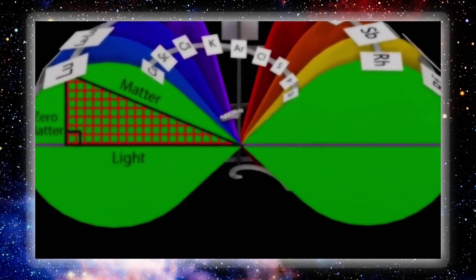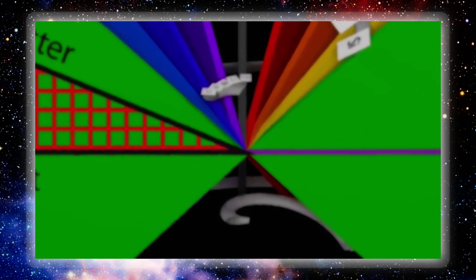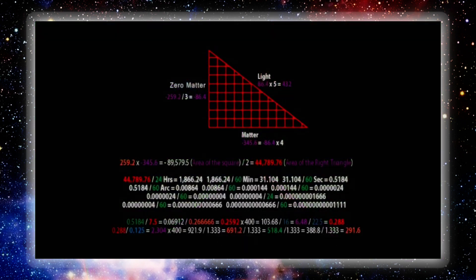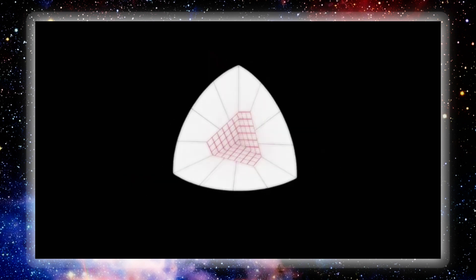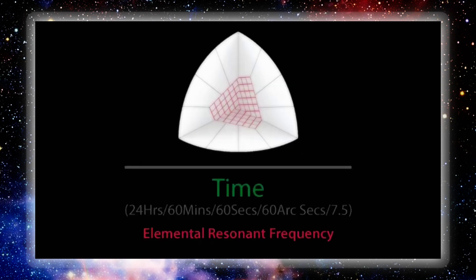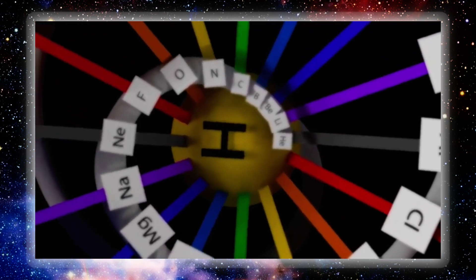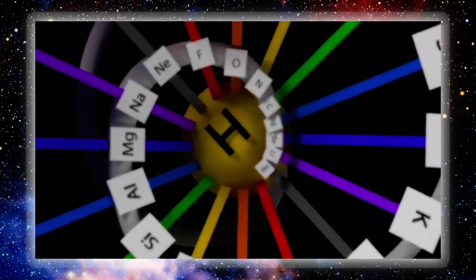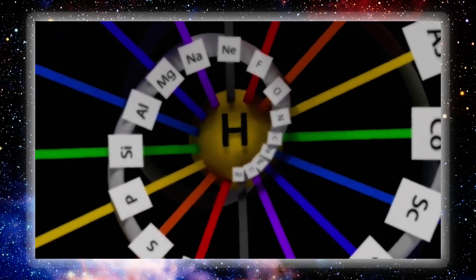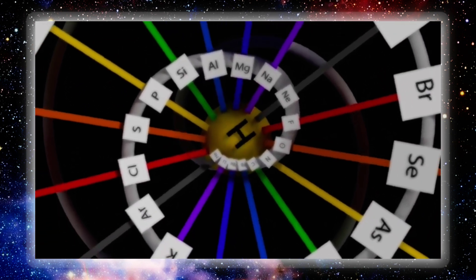The zero center is the collision point of the north and south poles' opposite spirals. This cancels out the spin and therefore the AC frequency, replacing it with a DC singularity zero point. This 3-4-5 triangle displays the ratios of zero matter to light and light to matter. From the area of this right triangle with ratios of 3-4-5, we are able to calculate the resonant frequency of the element. This is done by dividing the ATV — area-time-volume — by time.